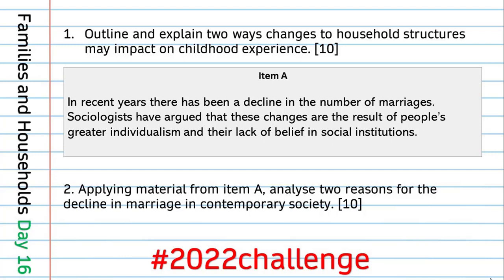That finishes Culture and Identity — probably the toughest part of the section so far, although Health next week will likely be a little bit tougher. We're now moving on to Families and Households, which about 90% of students do. The first question is: outline and explain two ways changes to household structures may impact on childhood experience — making a link from household structures to childhood. Think about beanpole families and the involvement of grandparents, lone parent families, and reconstituted families.